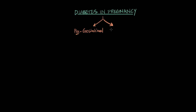And then there are the women who become diabetic during their pregnancy, which is called gestational diabetes. 90% of cases — so nine of every ten cases of diabetes in pregnancy — fall into this category of gestational diabetes, and the other 10% are pre-gestational diabetics.